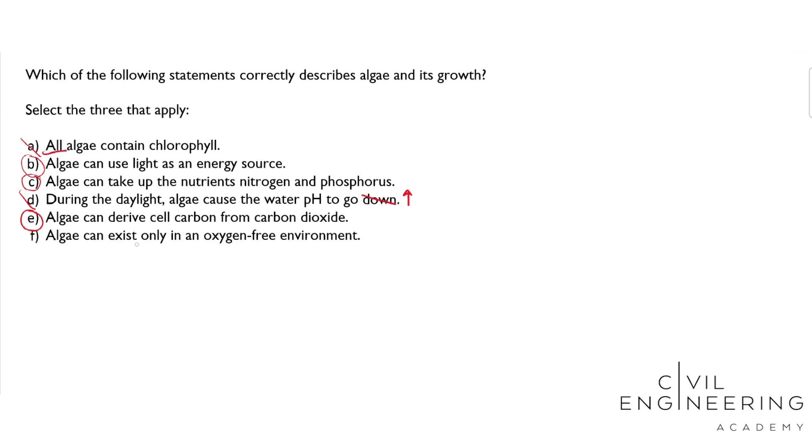And lastly, F: Algae can only exist in an oxygen-free environment. Again, stay wary of words like 'only'—that's probably not true. We know that algae need to grow in aerobic environments, meaning oxygen-rich. Don't assume that algae grow in anaerobic environments.